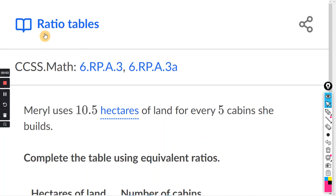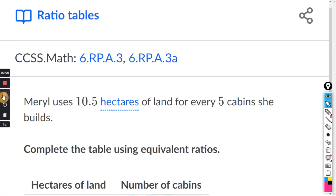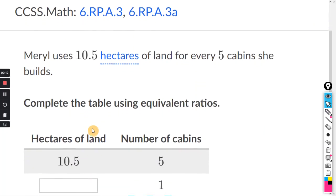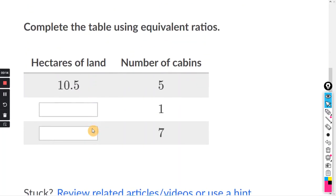This will be for the Khan exercise, ratio tables. It says Merrill uses 10.5 hectares of land for every five cabins she builds. Complete the table using equivalent ratios.